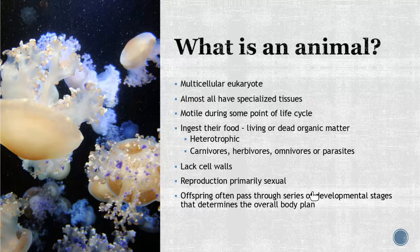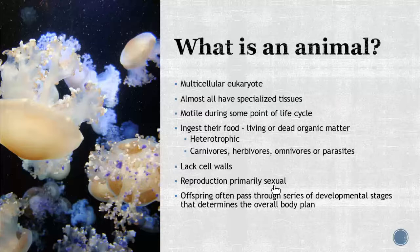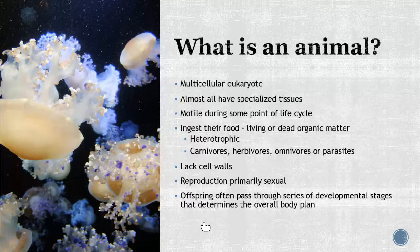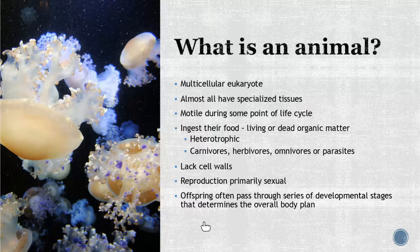But most animals primarily utilize sexual reproduction, which I'll talk about more later. You're also going to see that offspring often pass through a series of developmental stages. Sometimes they can look very similar to what they'll become as adults, or they can be completely different — think about caterpillars and butterflies. There's a lot of diversity when it comes to that too.